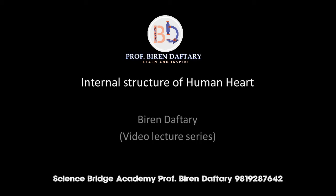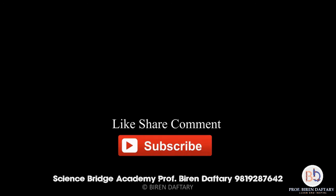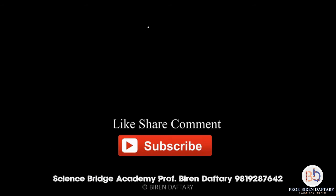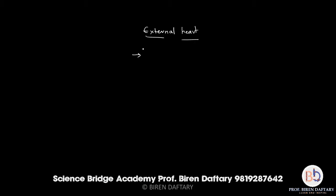Hello and welcome to my video lecture series. Our topic for today is the internal structure of the human heart. Let's begin by revising a few things regarding the external structure. The human heart is a four-chambered heart — there are two atria, the left and the right, and two ventricles, the left and the right. The right side of the heart is concerned with transport of deoxygenated blood.